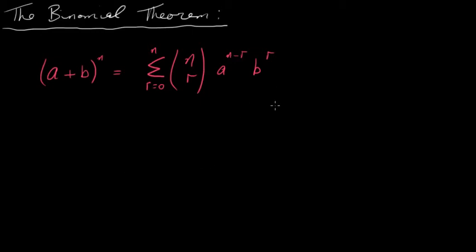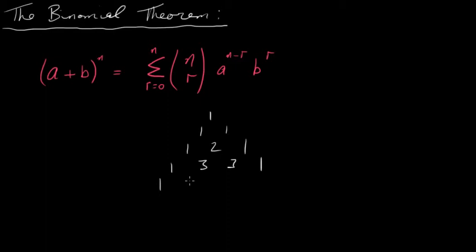We've done this before in a previous video where we expanded something like this using Pascal's triangle. But instead of using Pascal's triangle now, we're going to use n choose r to find the coefficients. So if you remember from the previous video, to find the coefficients, we used 1, 1, 1, 2, 1, 1, 3, 3, 1, 1, 4, 6, 4, 1, and so on. You just add these two terms to find this one, these two terms to find this one, 3 and 3 is 6, 3 and 1 is 4, and so on. So this gives us our coefficients for this expansion.